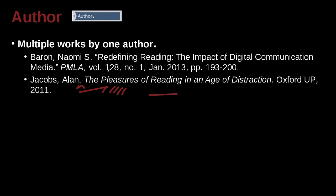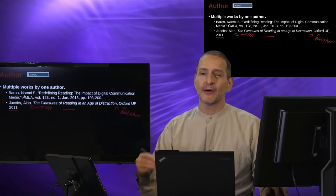This author Jacobs Allen and his book called The Pleasures of Reading in an Age of Distraction. Then we have a period, and then the publisher: Oxford. UP is the abbreviation for University Press — check the MLA guidelines for the list of abbreviations you can use. Oxford University Press, comma, then the year of publication. You do not have location anymore — MLA used to have location but you do not use it in the newest edition of MLA.